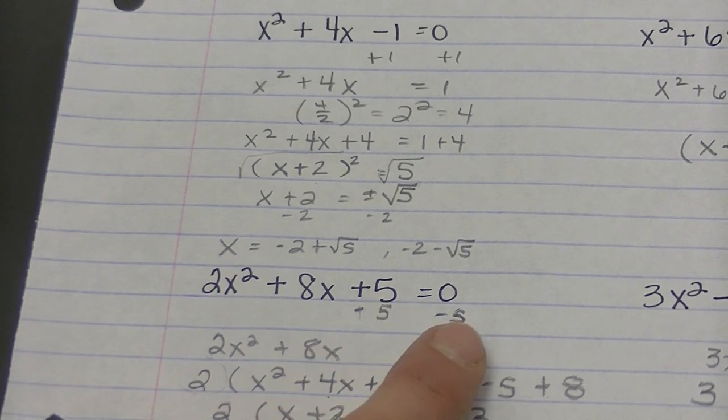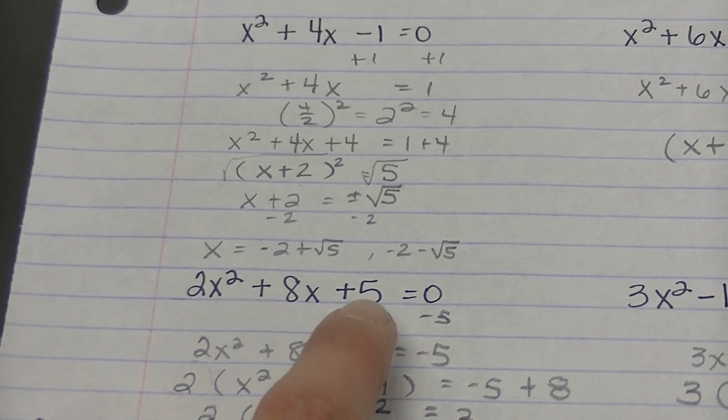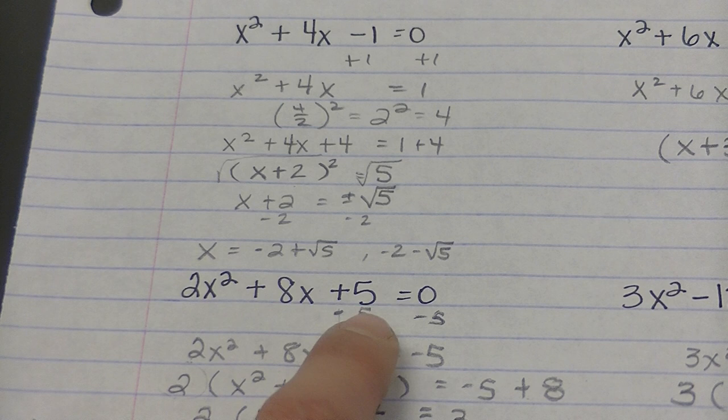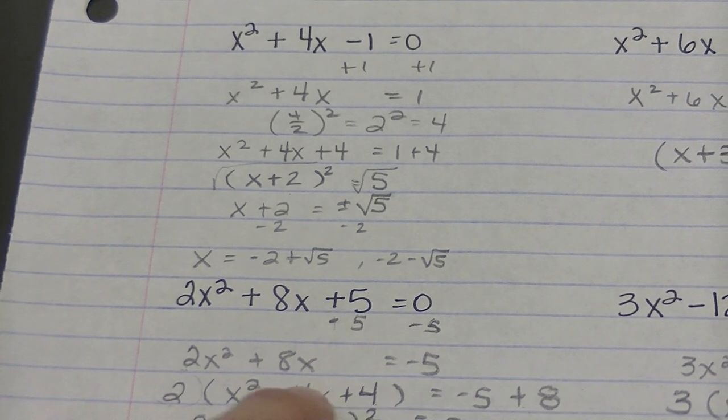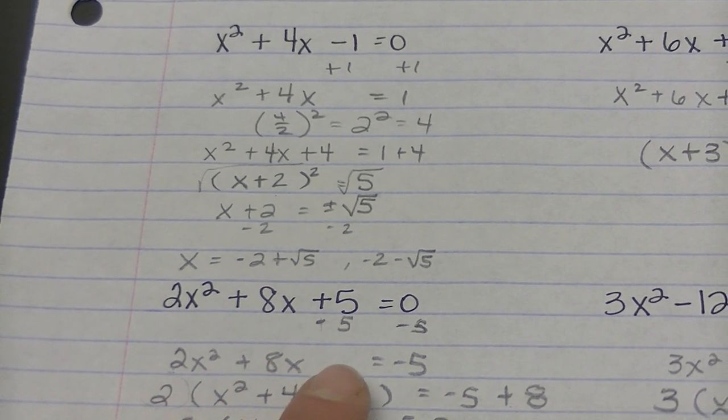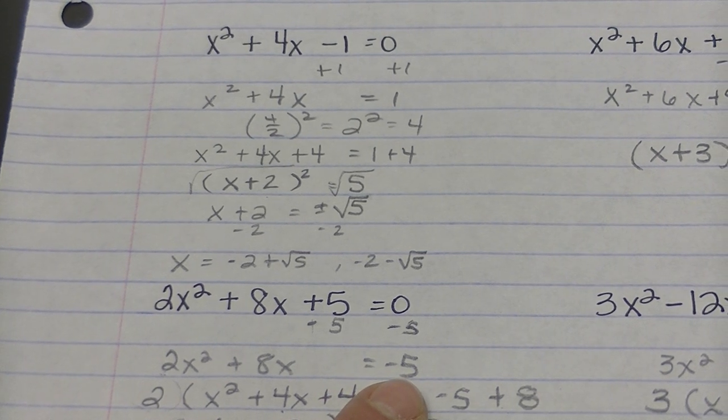Your first step is still the same. I'm going to get rid of the number out front or excuse me, the number at the end. So in this case, I'm going to subtract 5 from both sides. So I have 2x squared plus 8x equals negative 5 because I subtracted.